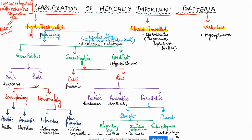The three groups are: rigid thick-walled, flexible thin-walled, and wall-less. In the rigid thick-walled group, bacteria are either free-living or non-free-living, that is, intracellular parasites. Examples of intracellular parasites are Rickettsia and Chlamydia. Free-living, rigid thick-walled bacteria are further classified into three classes: gram-positive, gram-negative, and acid-fast. Gram-positive bacteria can be cocci or rods; cocci include Streptococcus.